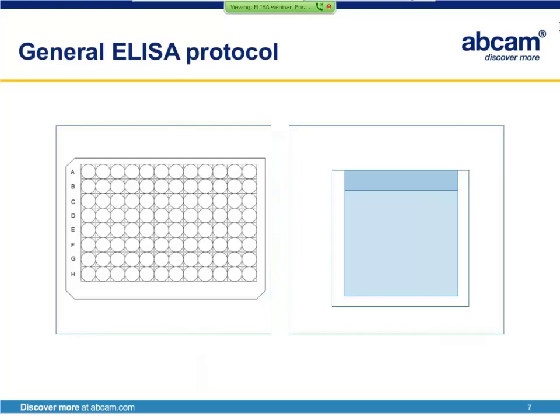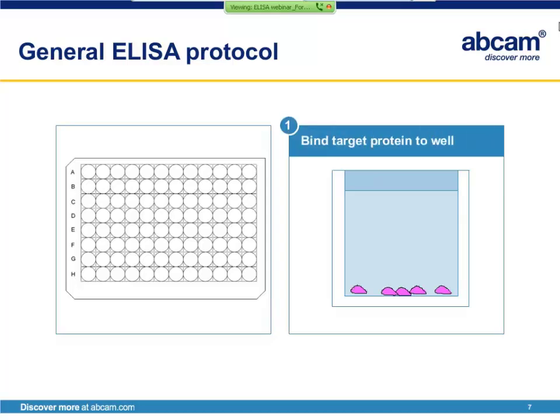Here's just a brief overview of a standard ELISA. On the left, you see a schematic of a traditional 96-well microtiter plate, and on the right, we have magnified one well to demonstrate the general steps of the assay. In step one, we'll bind the target to the microtiter plate well. And in step two, we'll block the well to prevent unintended binding of subsequent assay reagents.